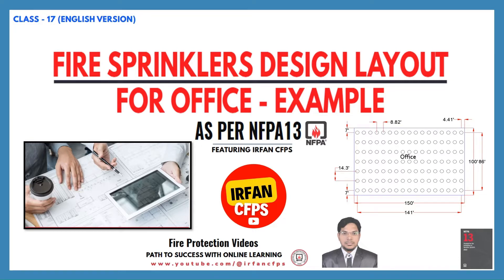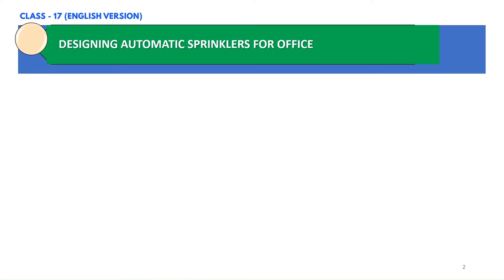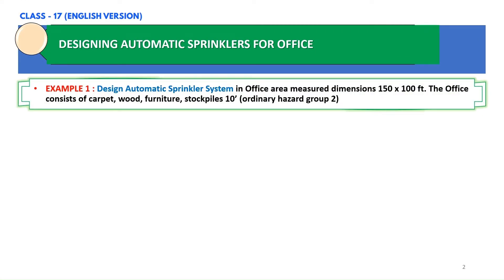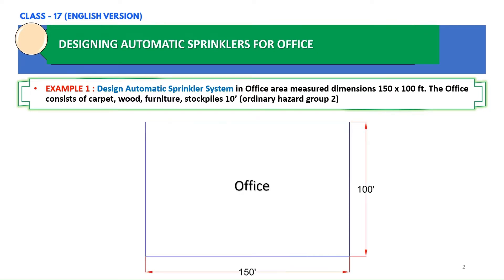Let us design automatic sprinklers in an office area by considering an example. We shall consider an office which has an area of 15,000 square feet with dimensions 150 by 100 feet. The example states that it consists of carpet, wood, and furniture with stockpiles about 10 feet in height. The occupancy is mentioned as ordinary hazard group 2. If you want to learn about the hazard occupancies, you can watch my video series on NFPA 13. The link can be found in the description box.